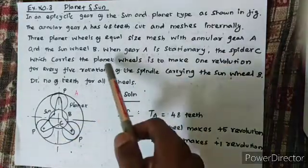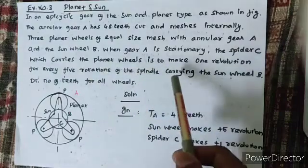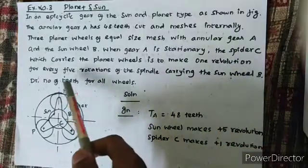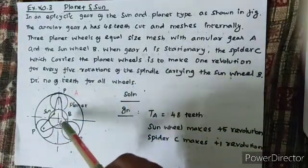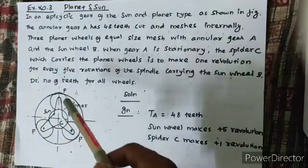When gear A is stationary, the spider C which carries the planet wheels is to make 1 revolution for every 5 revolutions. Then, one revolution means we will rotate 5 revolutions inside.